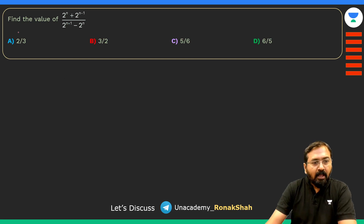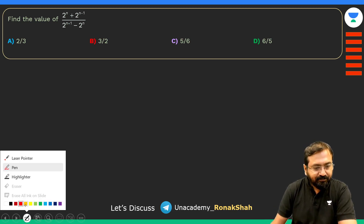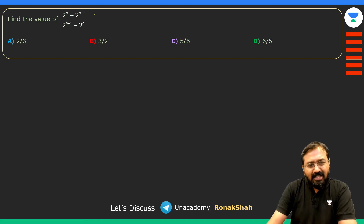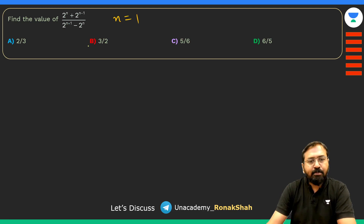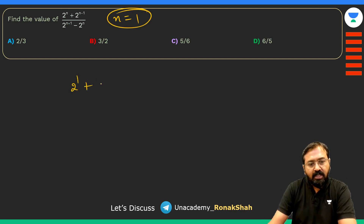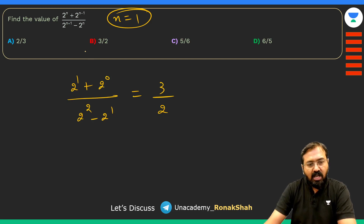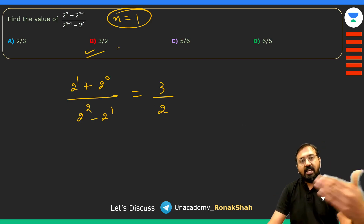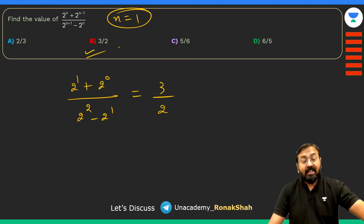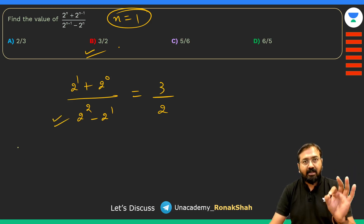For the next question, plug in n=1: the expression becomes (2¹ + 2⁰) / (2² − 2¹) = 3/2. You can verify with n=2 or solve algebraically by taking common factors — you'll get the same answer 3/2. This is the easiest method; you get the solution in about 10 seconds.